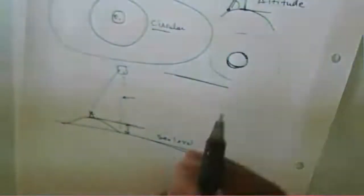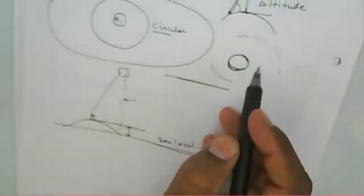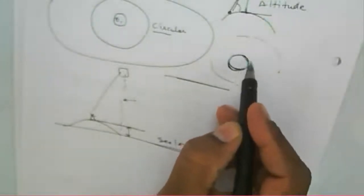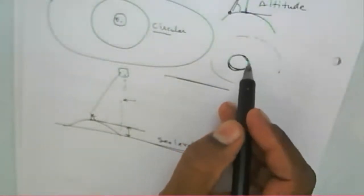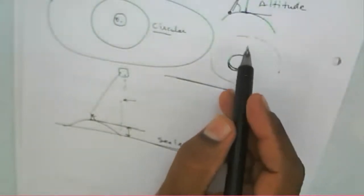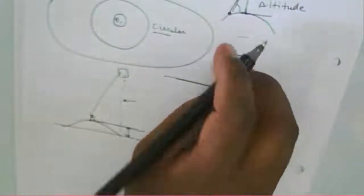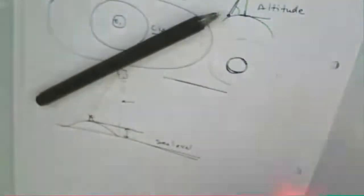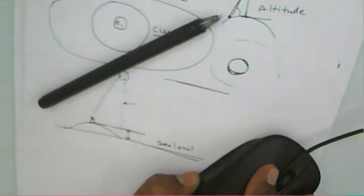The satellite's height changes because the surface is not fixed — it varies due to different terrain. Therefore, we need to keep the satellite in the same orbit despite these surface variations.